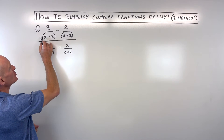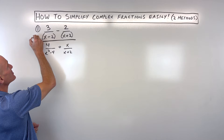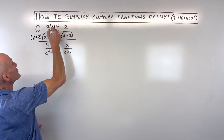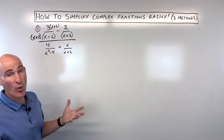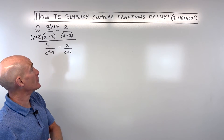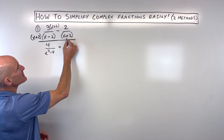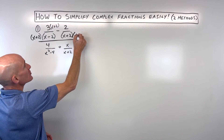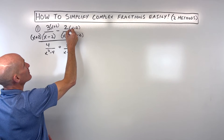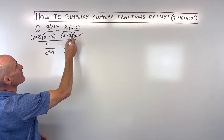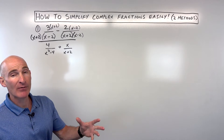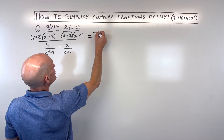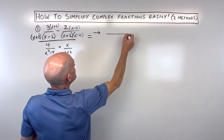What I mean by that is this fraction has an x plus two, but this fraction does not have an x plus two. So let's multiply the numerator and denominator by x plus two. x plus two divided by x plus two is one, so it's not changing the value of that fraction — it's just changing the way that it looks. Now this one over here has an x plus two in the denominator, but it's missing an x minus two. So let's multiply the numerator and denominator by x minus two. Now because they have a common denominator, we can combine them together into one fraction. The denominator I'm going to leave in factored form — this is just going to be x plus two and x minus two.